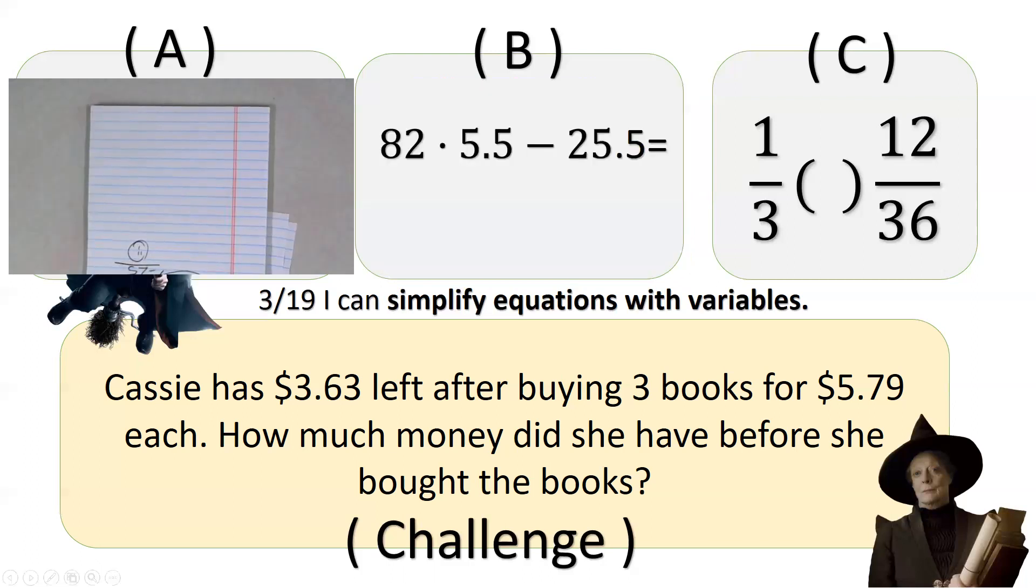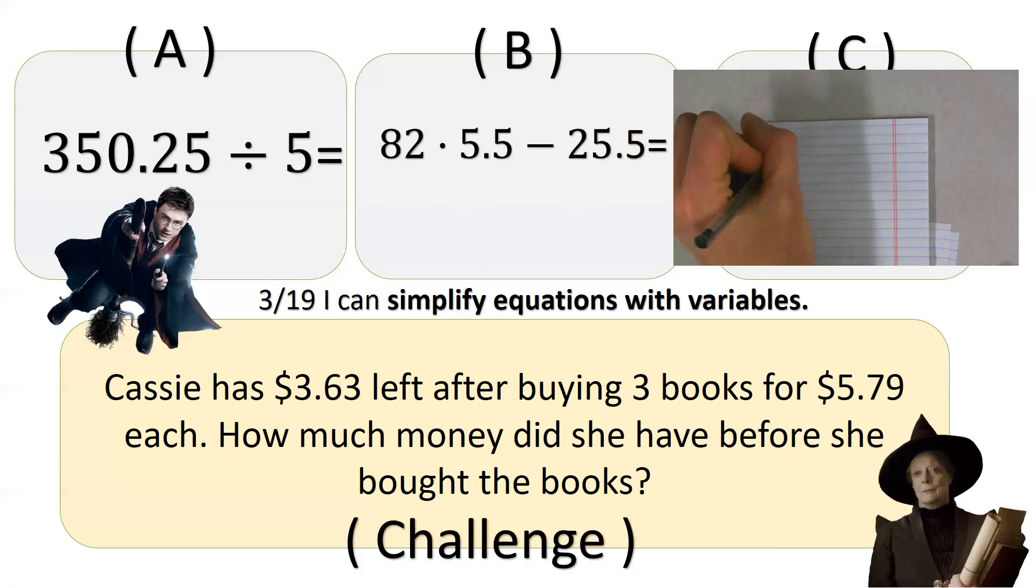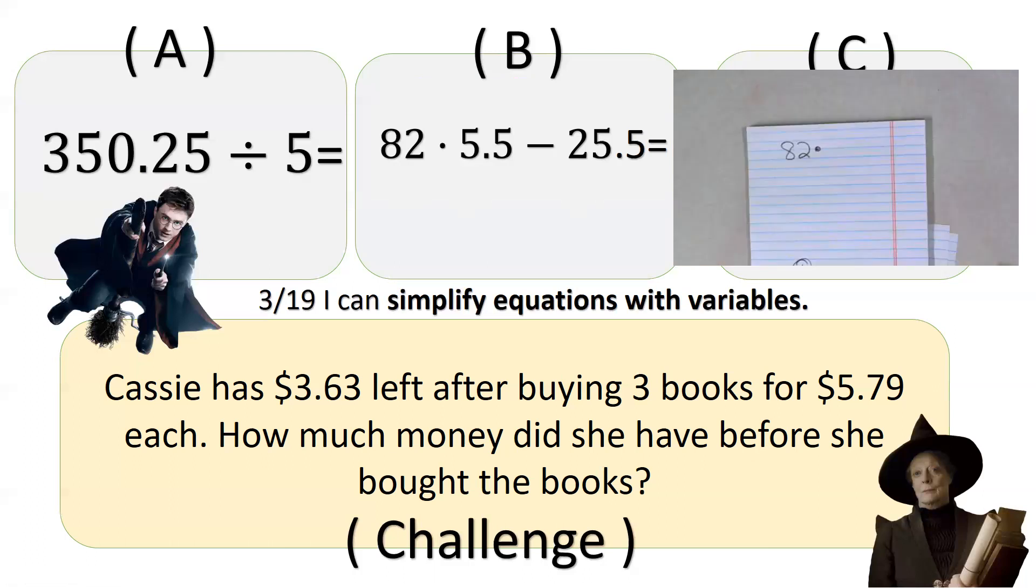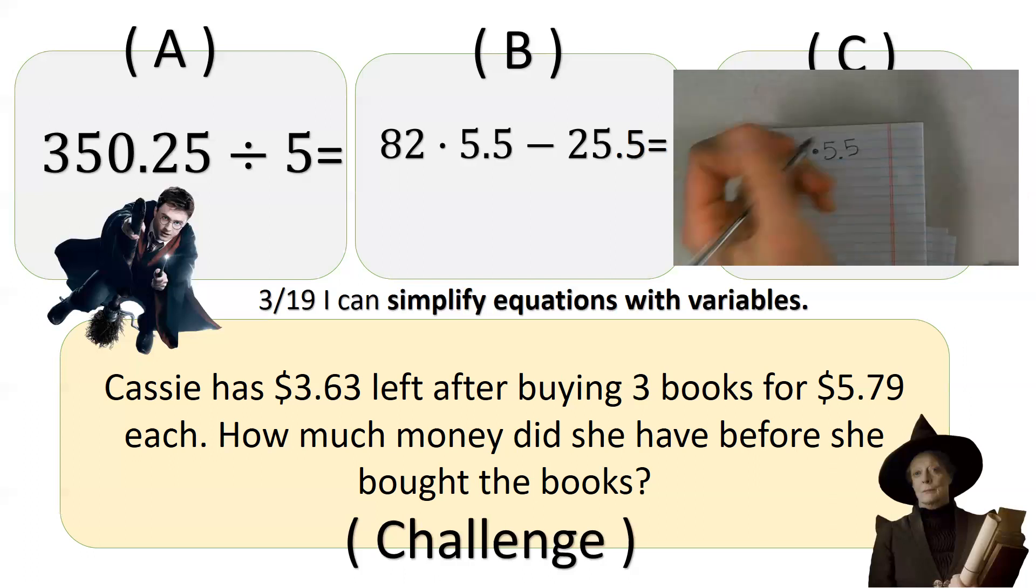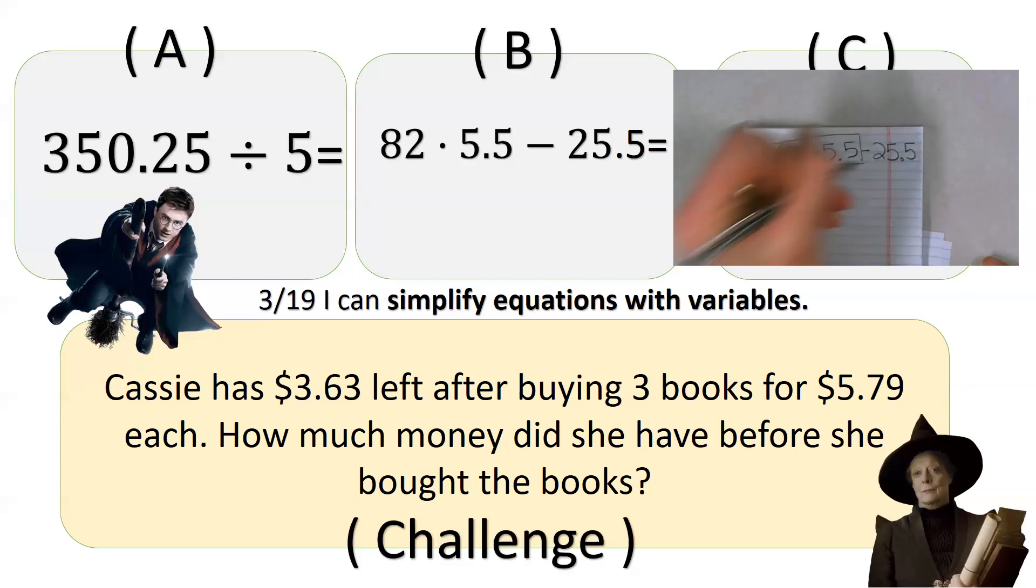Sorry, Harry. Let's go to B. This is what we're working on right now. So we have 82, and remember, this is a fancy-schmancy adult way to say multiplication. None of that kid stuff anymore. You kids don't see those x's anymore. We have 5.5, and we have 25.5.